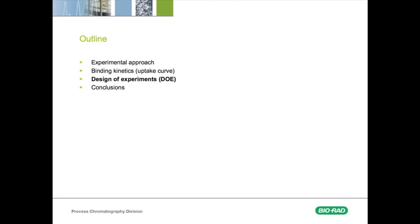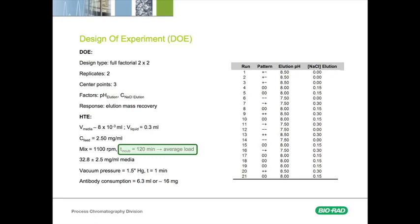Now, let's go to the DOE. DOE is a structured, organized statistical tool that can be used to determine the relationships between different experimental factors and the system responses.